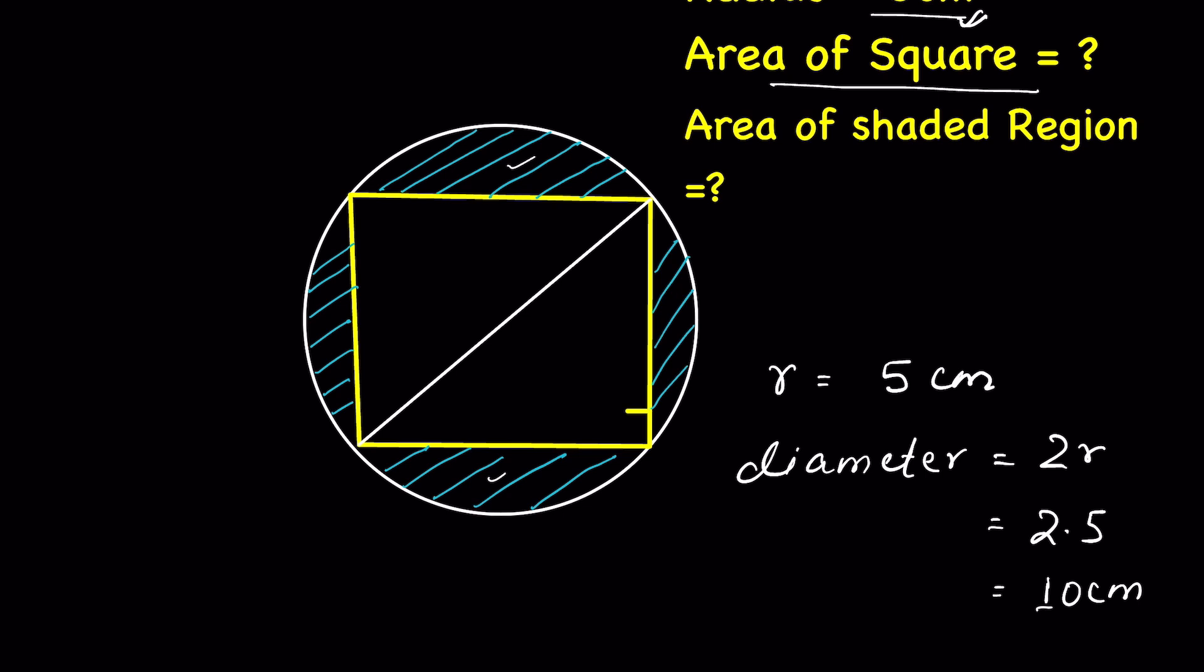Now, square means this angle is 90 degree. Similarly, if this is a 90 degree angle and the diameter is 10 cm, this is the hypotenuse of the triangle.